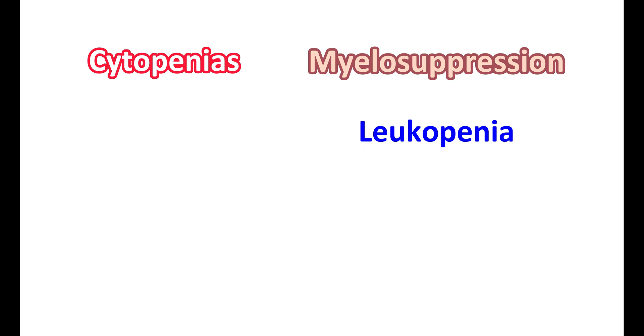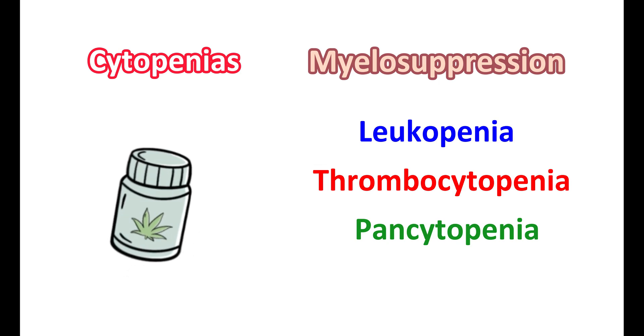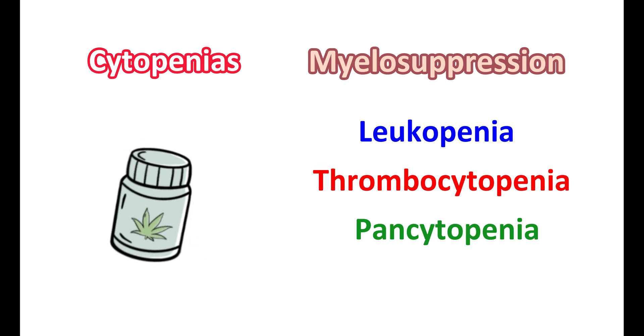Another important precaution is the development of cytopenias. Azathioprine can produce severe myelosuppression — bone marrow depression — resulting in leukopenia (decreased white blood cells), anemia (reduced RBCs), thrombocytopenia (abnormally low platelet count), and pancytopenia (decreased levels of all blood cells). These hematological toxicities are dose-related and highly increased at higher doses. In case of leukopenia, the dose of azathioprine may be reduced or temporarily withdrawn.